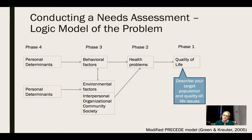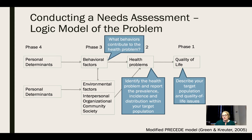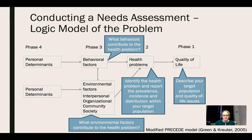In phase one you're going to describe your target population and the quality of life issues that they're facing. In phase two you'll identify the health problem and report on the prevalence, incidence, and distribution within your target population. In phase three you will describe what behaviors contribute to the health problem and also what environmental factors contribute to the health problem.